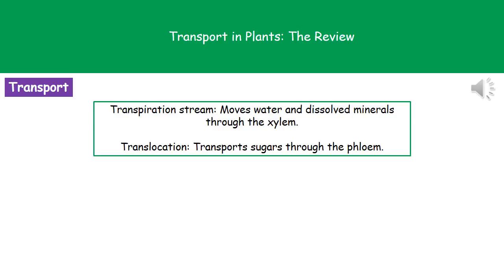Welcome to our review on transport in plants. First, we need to understand two key terms and their meanings. When we're talking about the transpiration stream, we're talking about the thing that moves water and dissolved minerals through the xylem. And when we're talking about translocation, we're talking about the transport of sugars through the phloem.